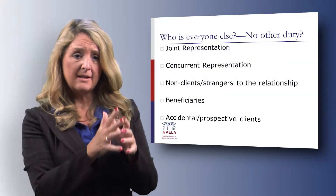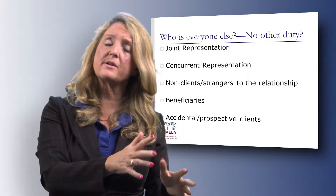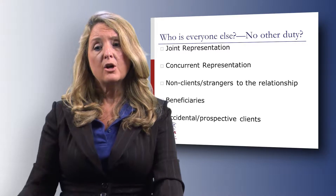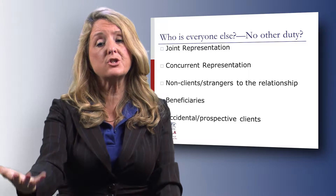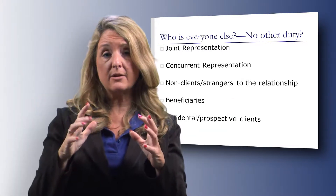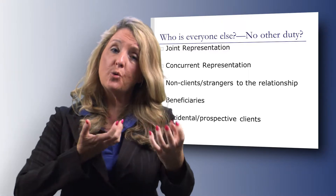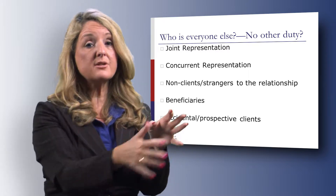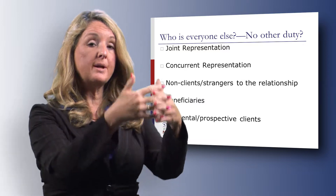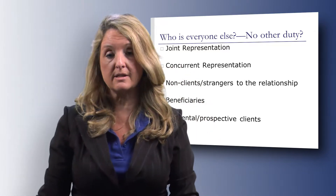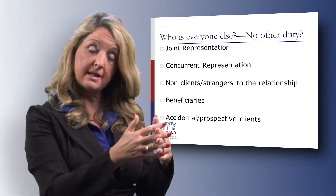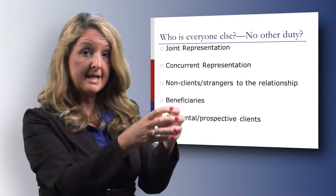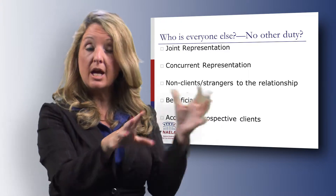If mom is going to be signing the will, the health care surrogacy, and the power of attorney, then who is everyone else who's involved, and do I have a duty to those other people? The first thing to consider is whether the attorney is entering into joint representation — meaning I represent two people jointly together, so their confidences will be shared among the two of them and the attorney. We see this often with husband and wife in estate planning. The important thing for them to understand is that in a joint representation, all confidences need to be shared.